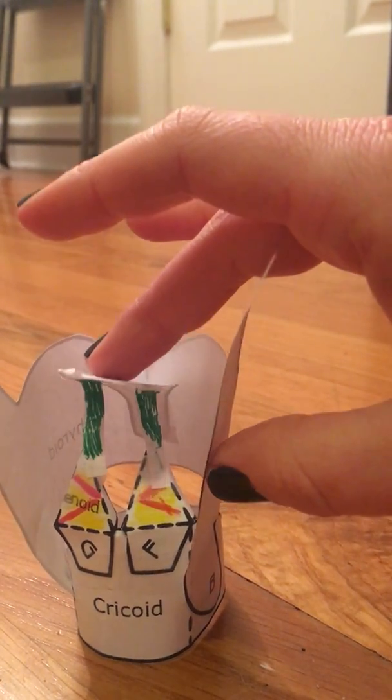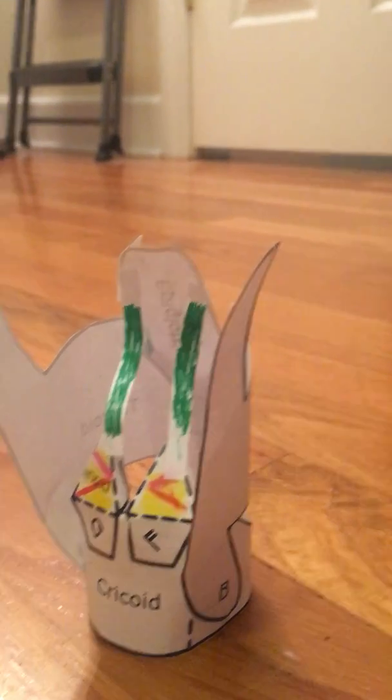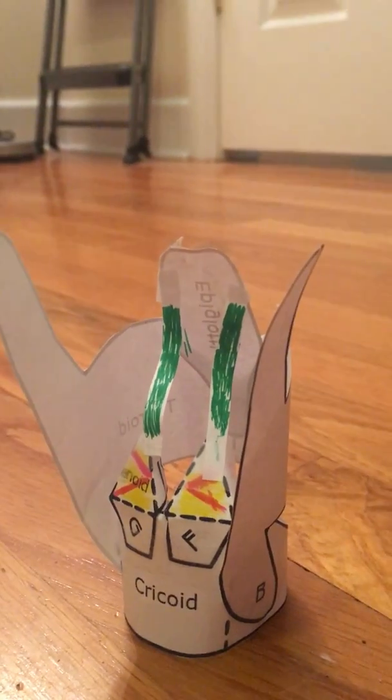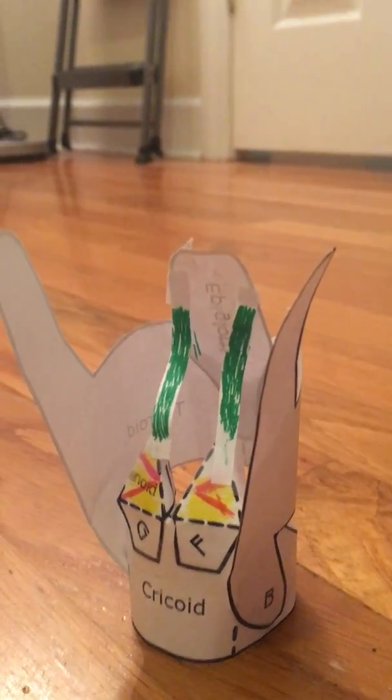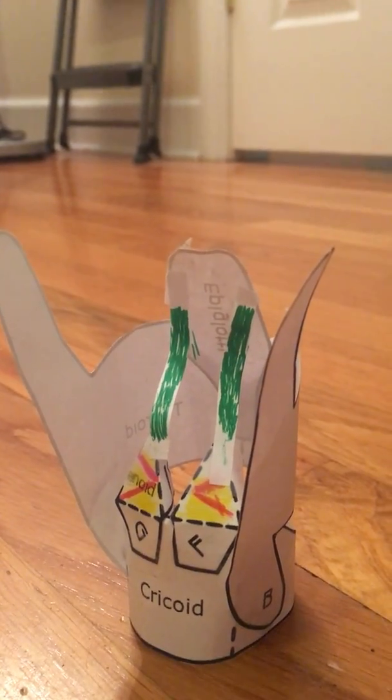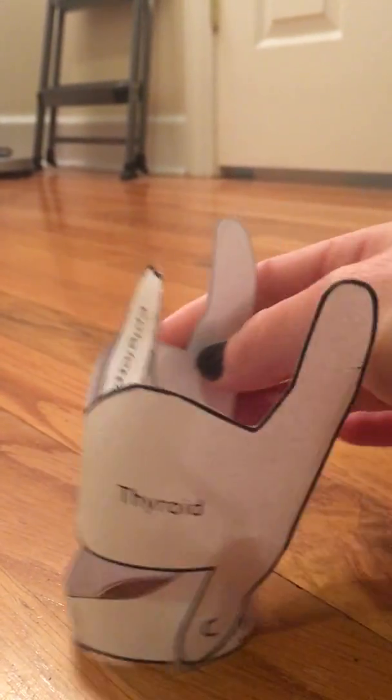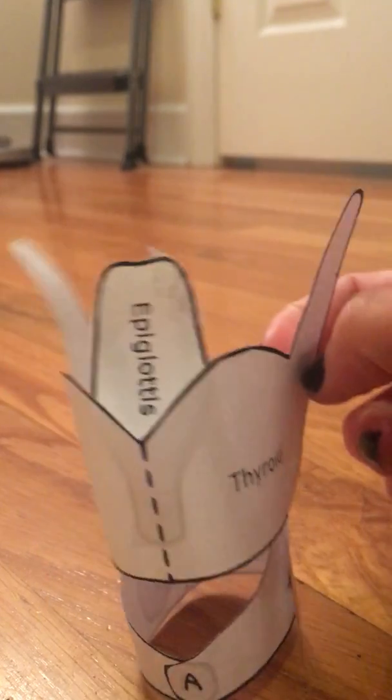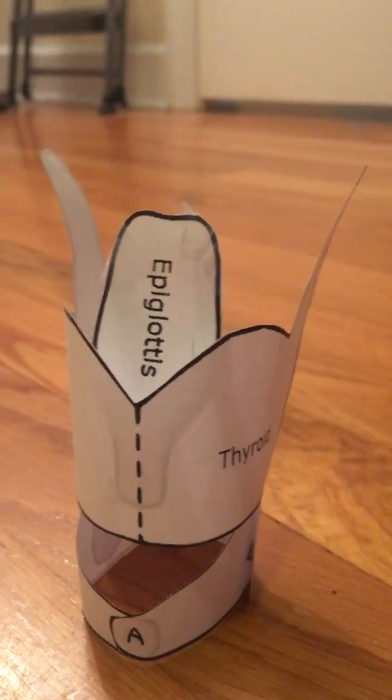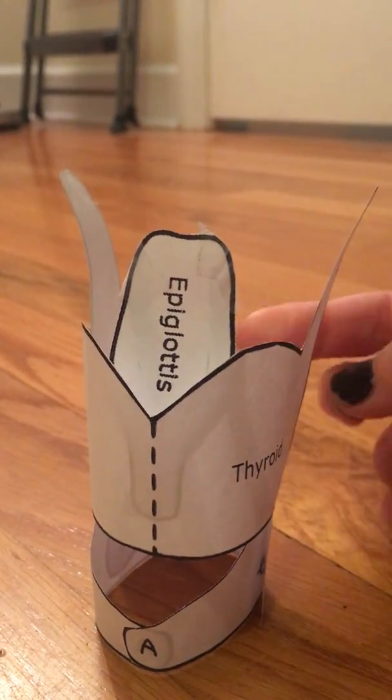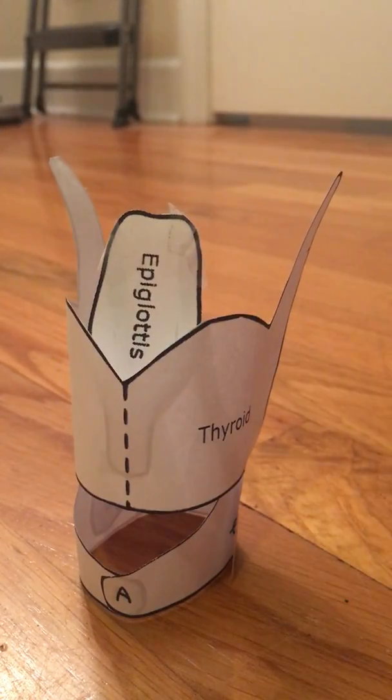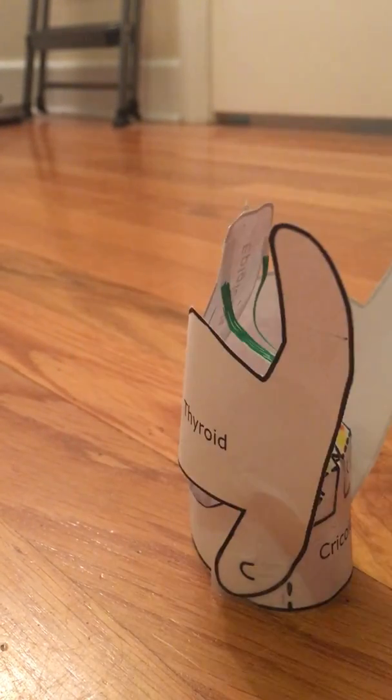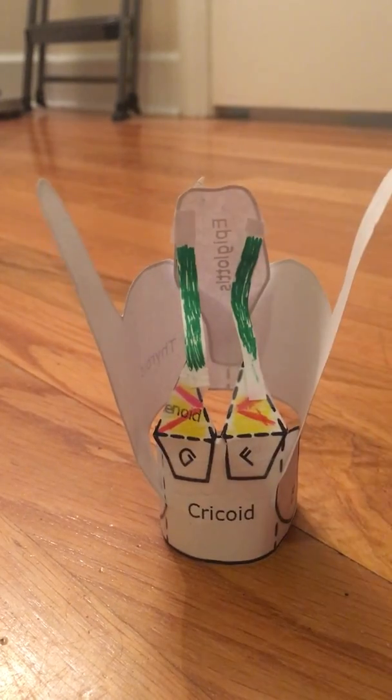The major function of the larynx that's not speech-related is to maintain airflow. Below the cricoid is the trachea. When the arytenoids are pulled closer together, they close the glottis, which closes the airway.